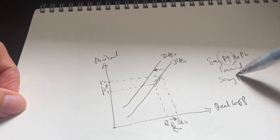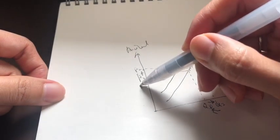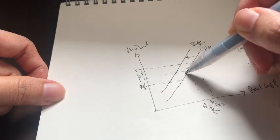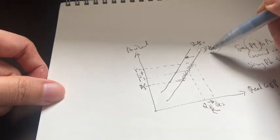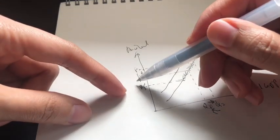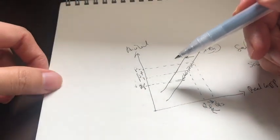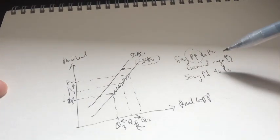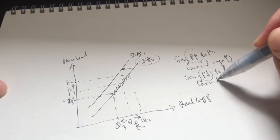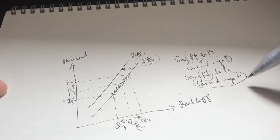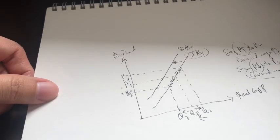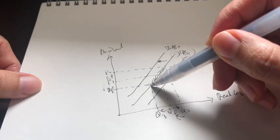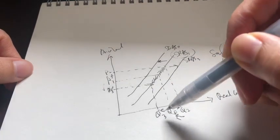Now say price falls to P3. When price falls, going back to the original short run curve, there is a downward movement along the existing short run aggregate supply curve. A fall in price reflects lower profitability, so firms don't have the incentive to produce much, and output falls. However, in the long run, input prices will also respond to the change in price — nominal wages will also fall. Now it's cheaper for firms to hire more workers, so the aggregate supply curve will shift to the right. Although initially output falls, with the shift of the aggregate supply curve, output goes back to the full employment level.